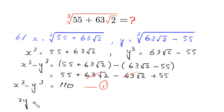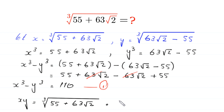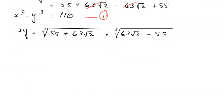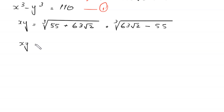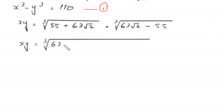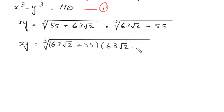Now we find the product x times y, which equals the cube root of (55 + 63√2) times the cube root of (63√2 − 55). This can be written as the cube root of (63√2 + 55)(63√2 − 55).